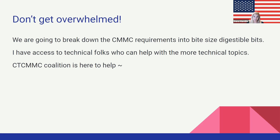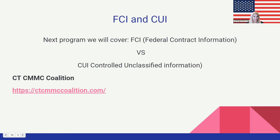I'm here for you, and I have technical people here to help. The Connecticut CMMC Coalition is here to help too. In our next episode, we are going to talk about FCI and CUI — federal contract information and the difference between that and CUI, controlled unclassified information.